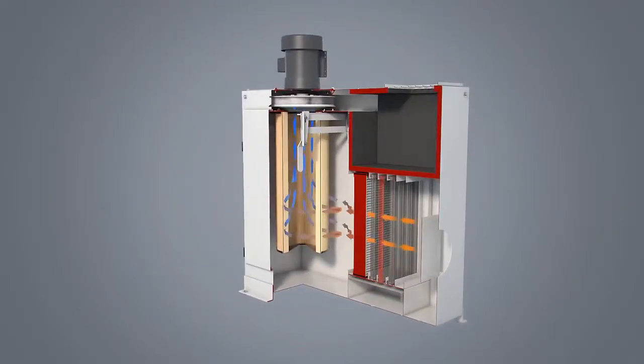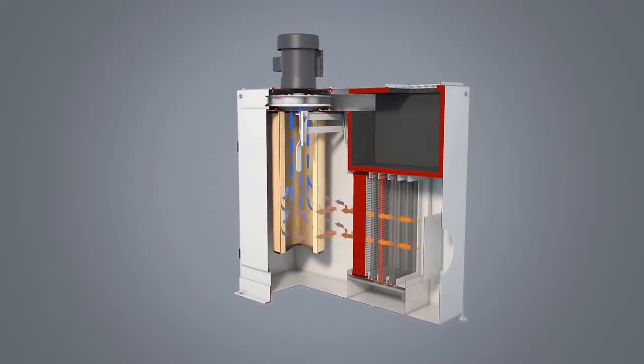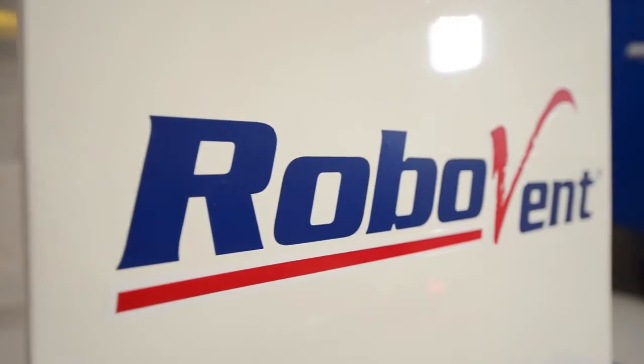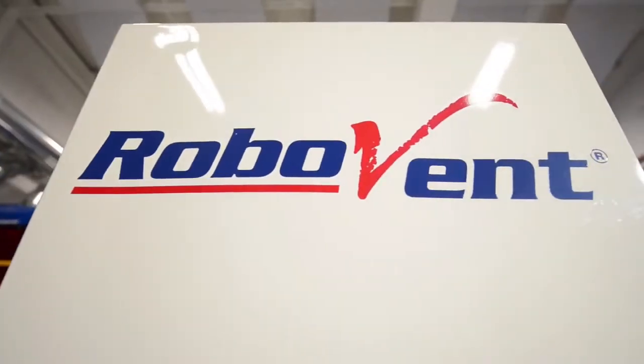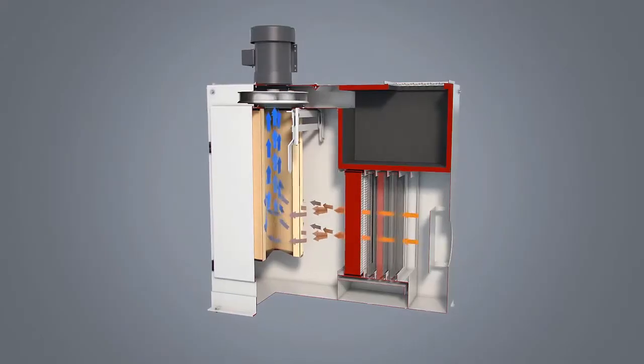The next two layers, the Z-PAC and the pleated cartridge, act as polishing filters where any microscopic oil droplets and smoke particles are removed, putting the final touches to the cleaning process.